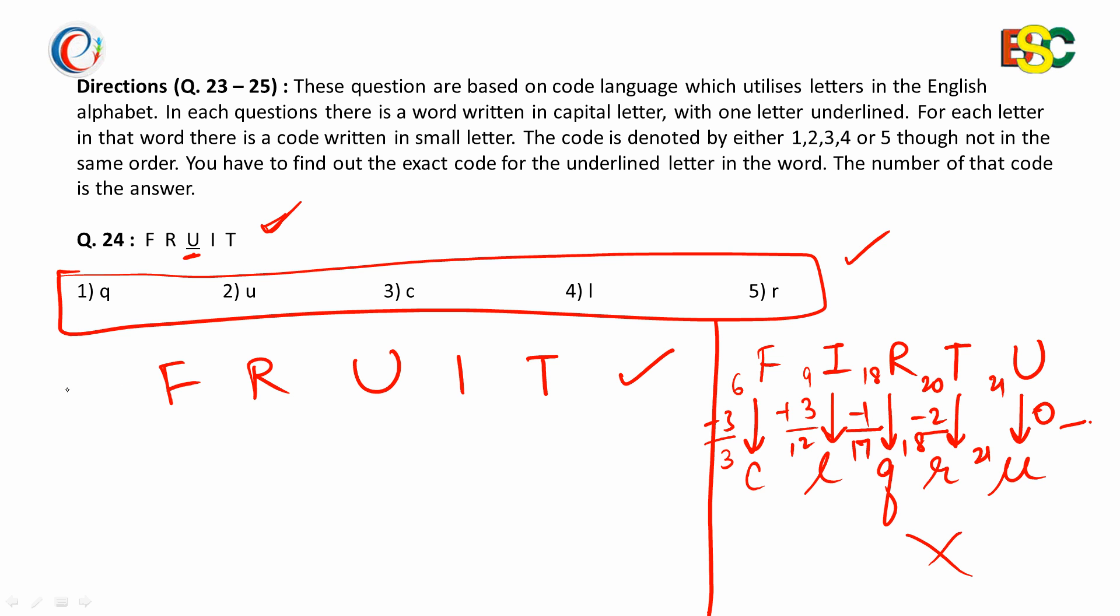In this word fruit, the smallest letter is F. And in the given options, the smallest code is C. So we will put C under F. Here 6 is getting changed to 3, so there is a decrease of 3.